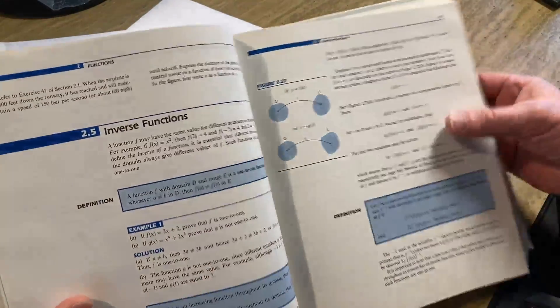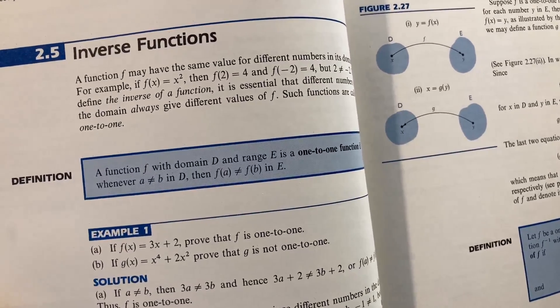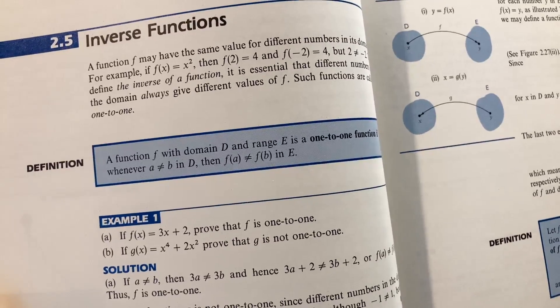What's this? Inverse functions. It's got my attention now. A function f with domain d and range e is one to one if whenever a is not equal to b, then f of a is not equal to f of b. Right, yes.